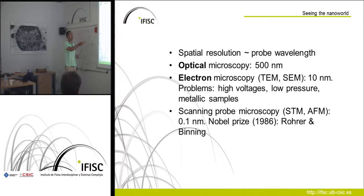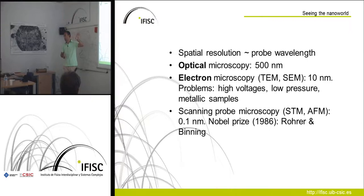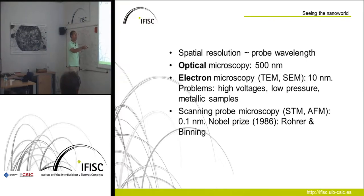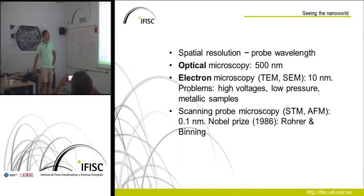People first tried electron microscopy: electrons are not only particles but waves, with typical wavelengths of around 10 nanometers, which is useful. The problem is that to manipulate electrons you need high voltages, and these devices are restricted to metallic samples — you cannot study biological systems like DNA with this technique. The big step came with Rohrer and Binnig, who were awarded the Nobel Prize for inventing scanning probe microscopy.